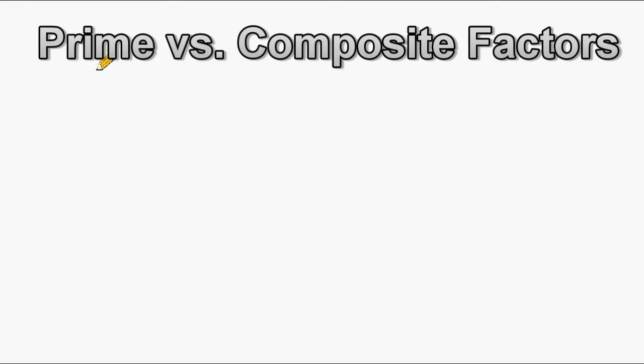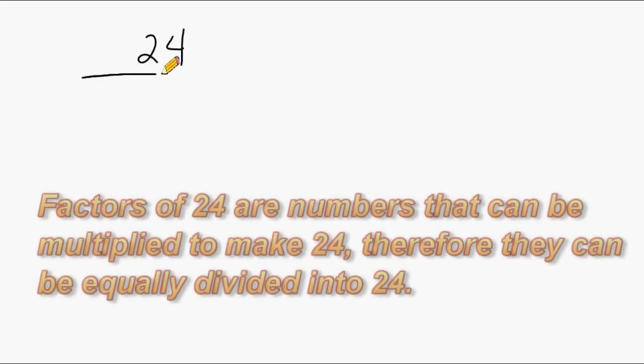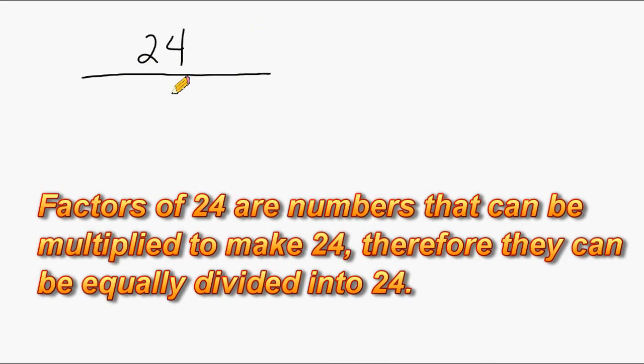This is Mr. Masonette and today we're going to work on prime factorization and also identifying the difference between a factor and a prime factor. To do this we're going to start with the number 24 and we're going to identify all of the factors of 24. Now remember, a factor is simply a number that can be equally divided into another number.